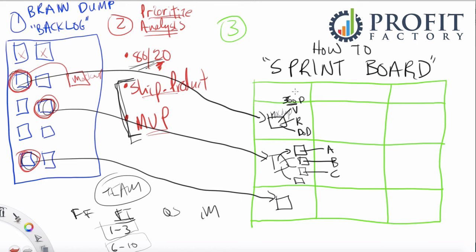Now you may be wondering, so what are these? These are called swim lanes. Swim lanes, one for each of your kind of higher level projects. And then the columns are to-do, doing, and done.